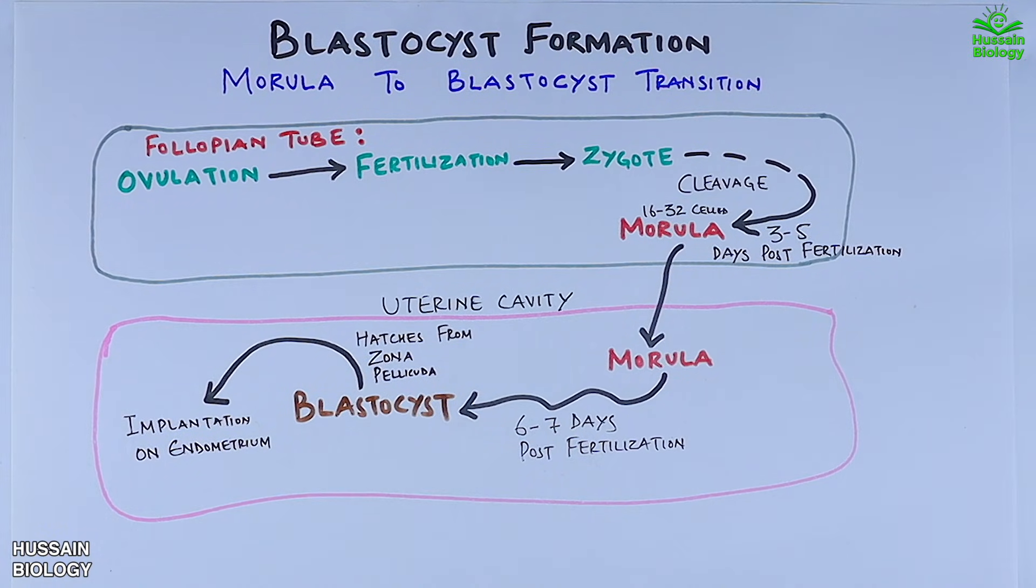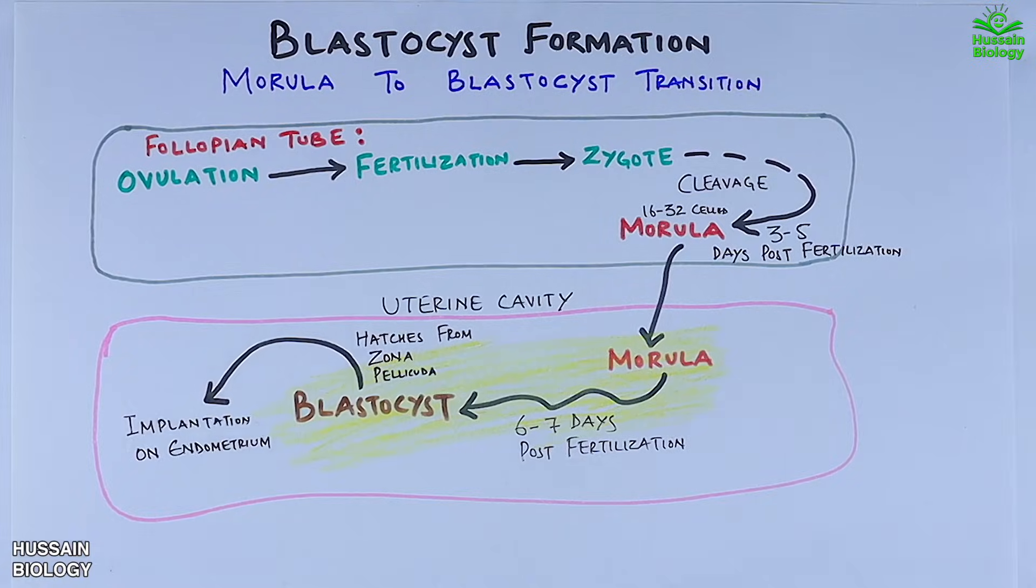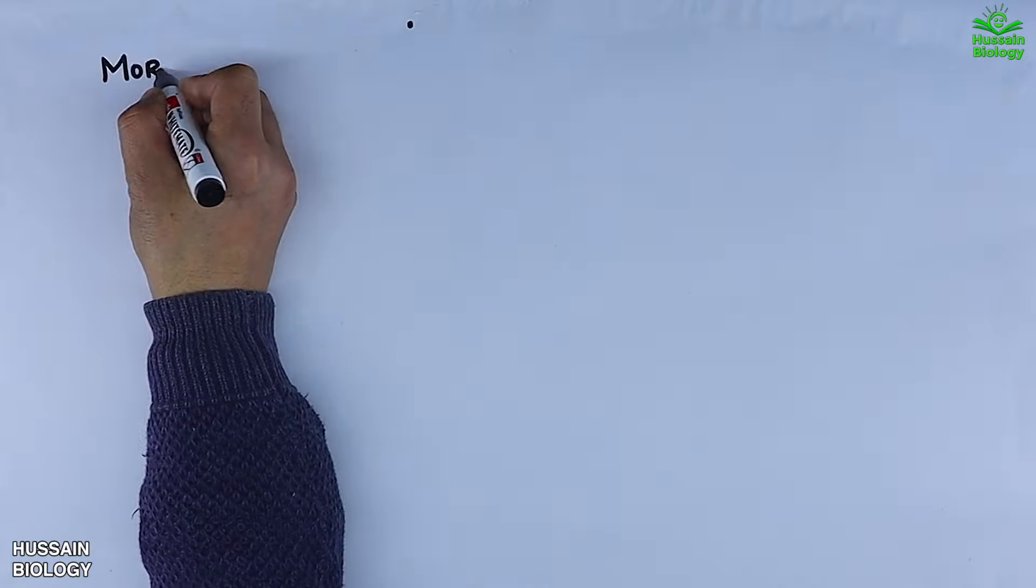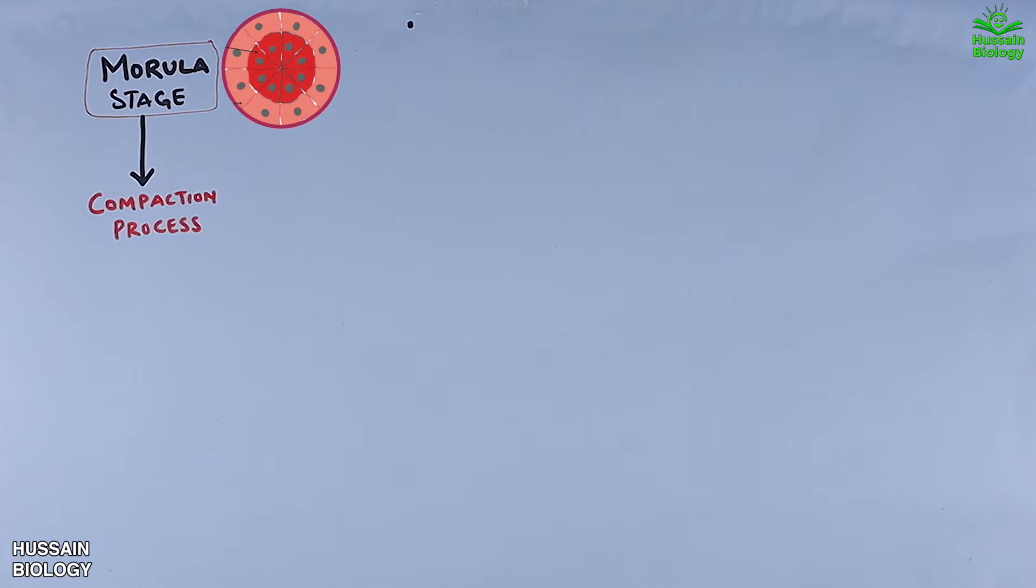The first part that occurs in the fallopian tube has already been discussed. Now this is what we are going to discuss: the morula to blastocyst part. Here we start with the morula stage. First it's driven into compaction process. The compaction is when the cells of morula tightly adhere to each other.